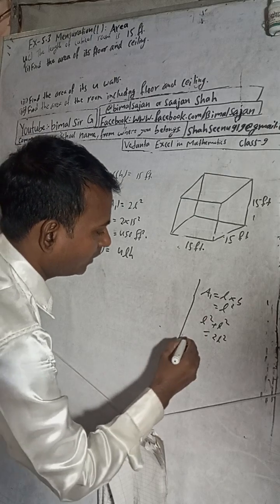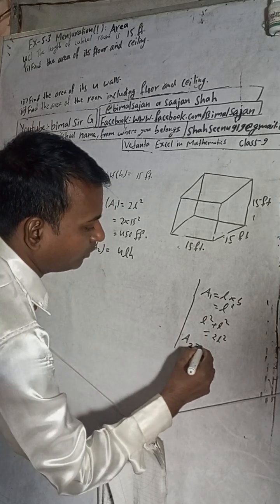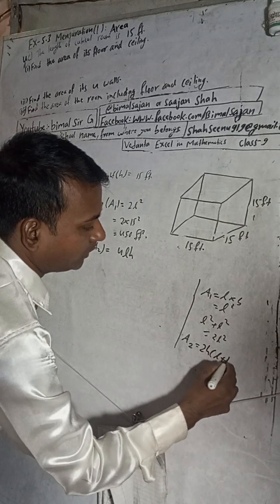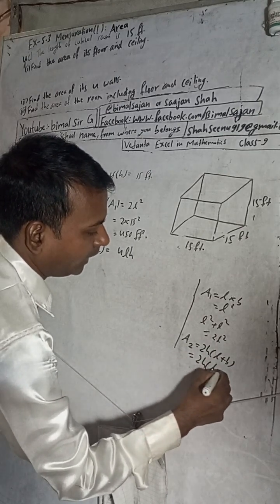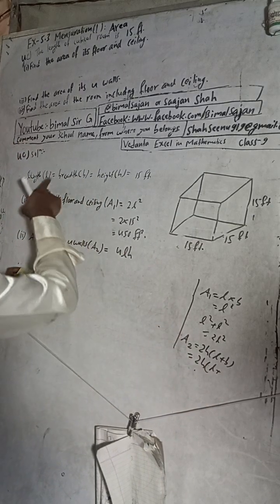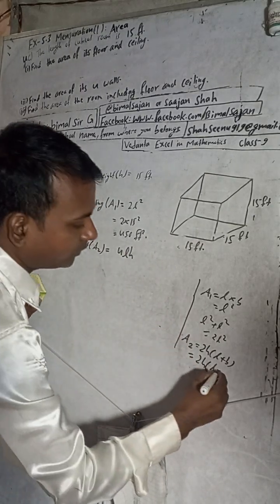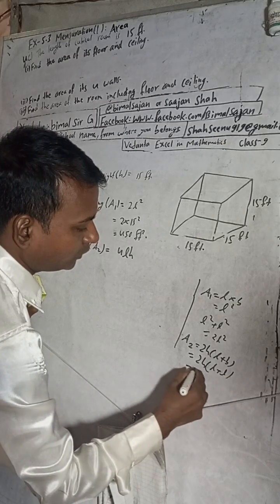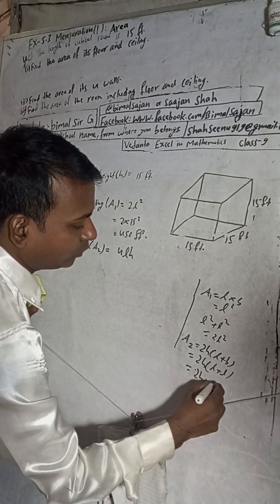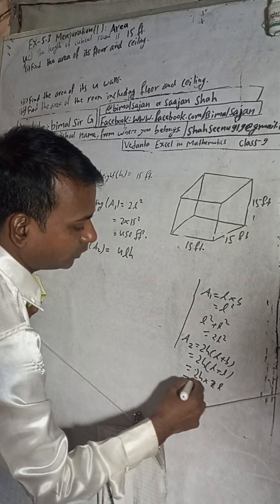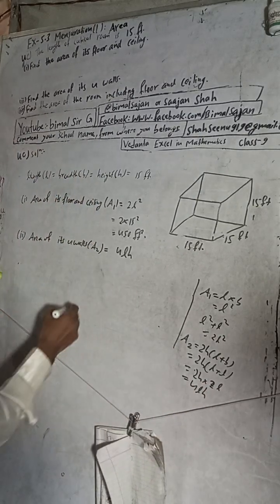The formula for four walls is: A2 equals 2H into (L plus B). Since L, B, and H are all equal, B equals L, so this becomes 2H into (L plus L), which is 2H into 2L. That simplifies to 4LH.